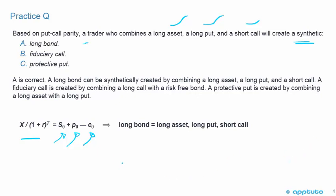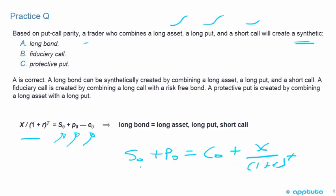You have to memorize the formula: S0 plus P0 equals C0 plus X over (1 plus R) to the T. Then you're just doing the rearranging. For a long bond: long on the asset, long on the put, and short on the call. You can answer that question very easily in less than 90 seconds.